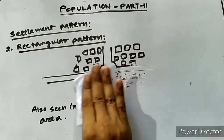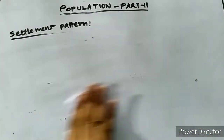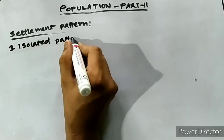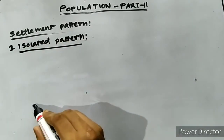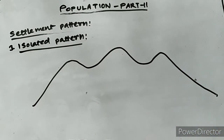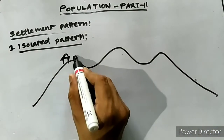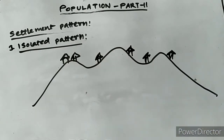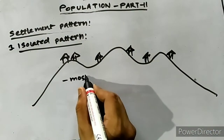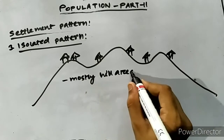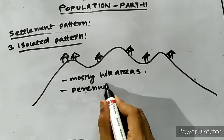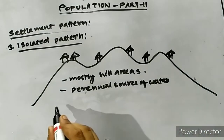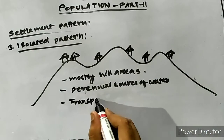The next settlement is the isolated settlement pattern. In the hills and foothill plains of Assam, habitations with only one, two, or a few homesteads are found. Such settlement grows up near a perennial source of water where transport and communication is less and development is also less. It is found mostly in hilly areas.